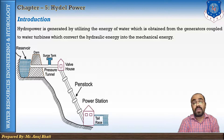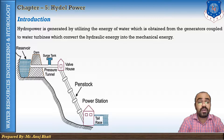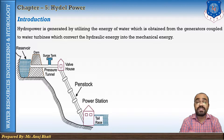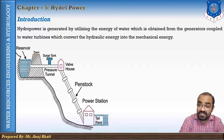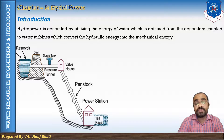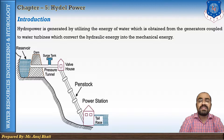Hydropower is obtained from generators coupled to water turbines which convert hydraulic energy into mechanical energy. A high head is required for running the turbines, which is created by constructing a dam across the river. Most multi-purpose schemes used for different purposes have hydro power as one of the major functions.